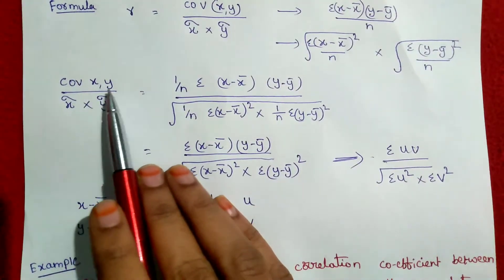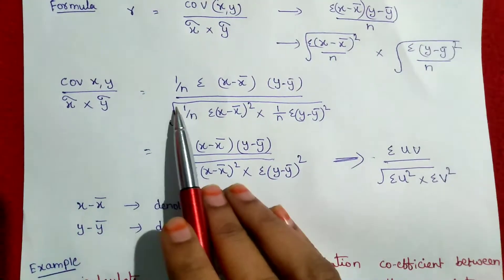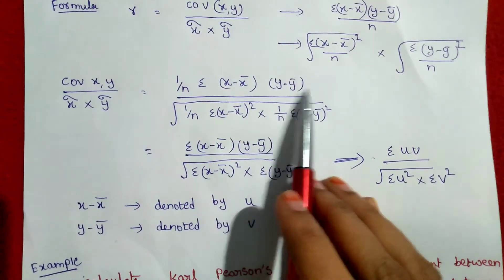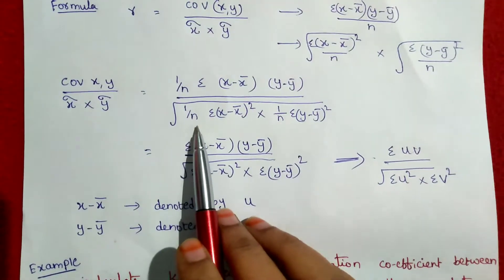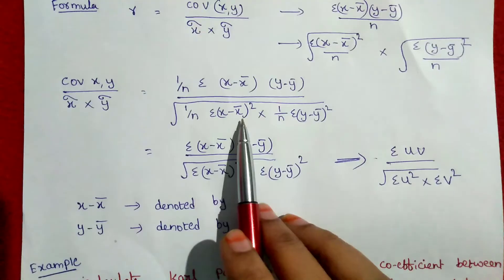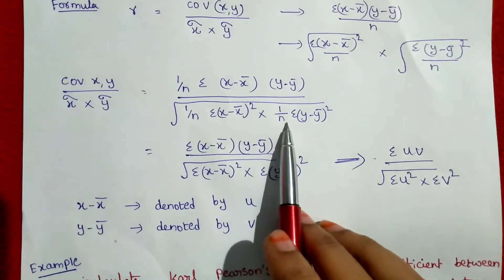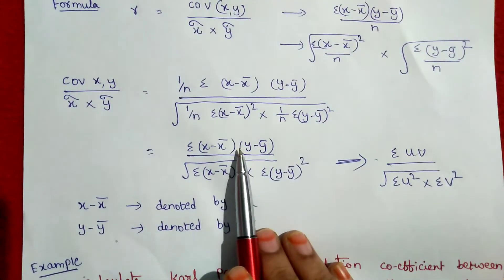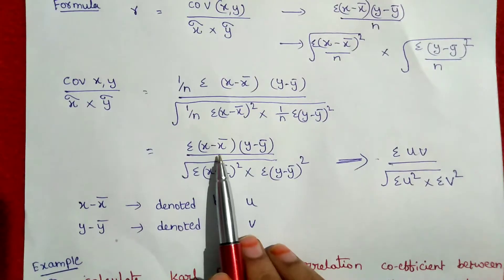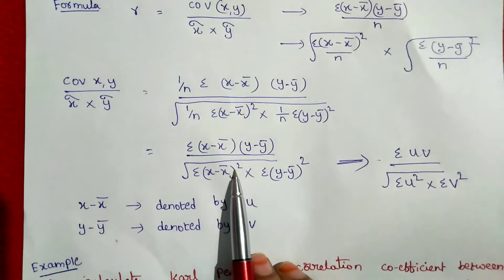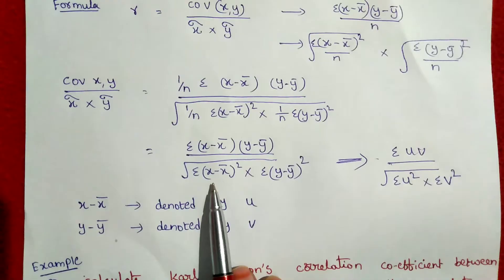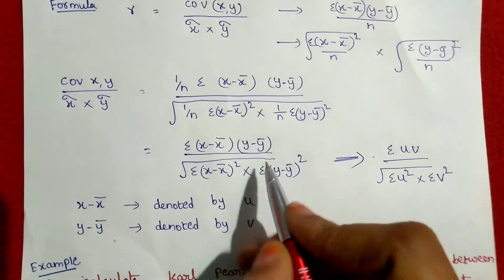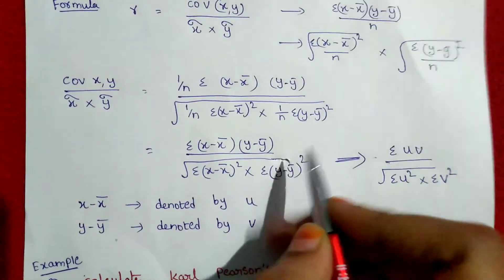So, the full formula becomes: 1 by n summation of x minus x-bar into y minus y-bar, divided by the square root of 1 by n summation of x minus x-bar whole square, into the square root of 1 by n summation of y minus y-bar whole square.